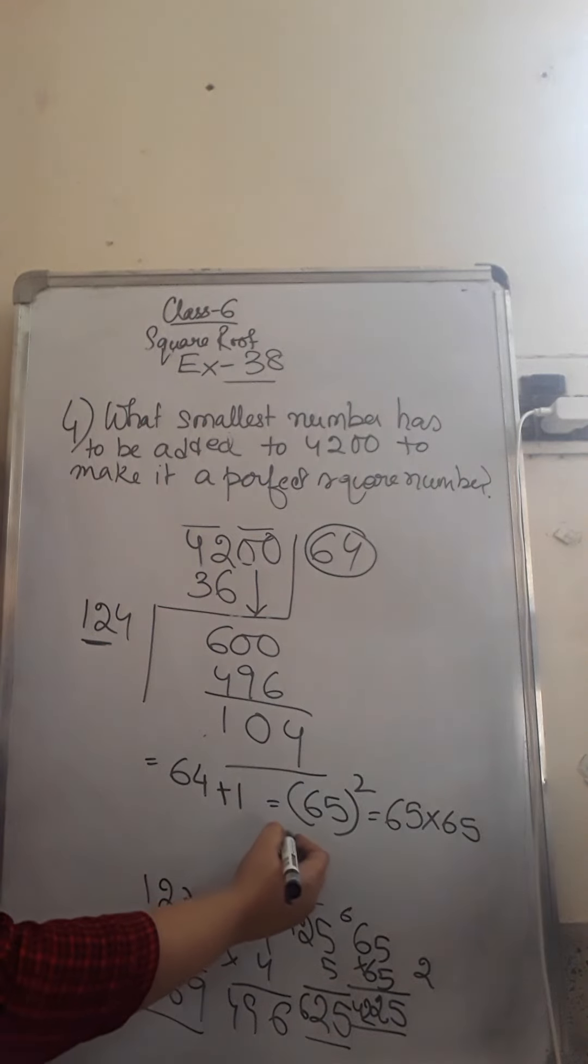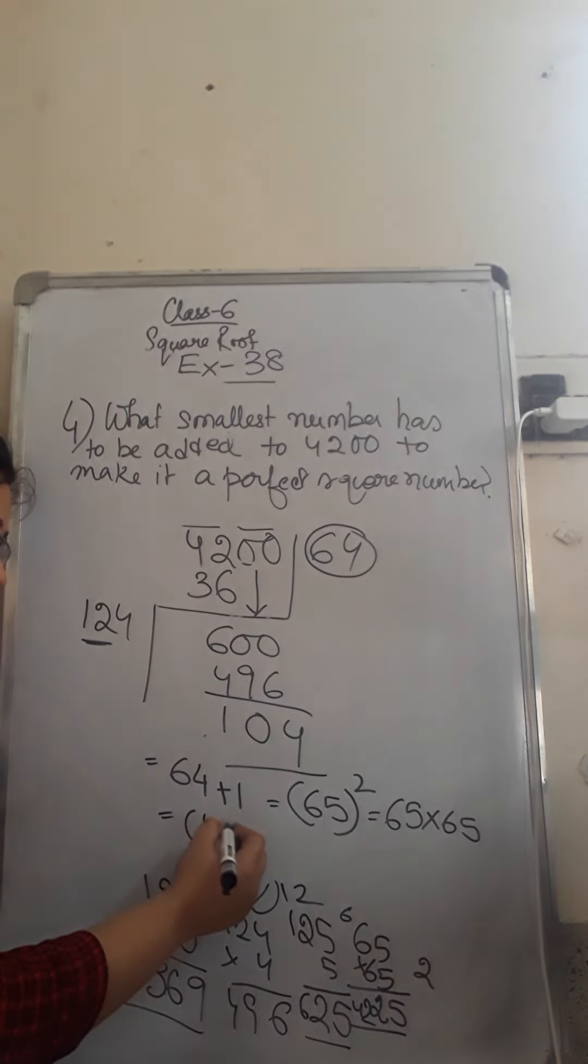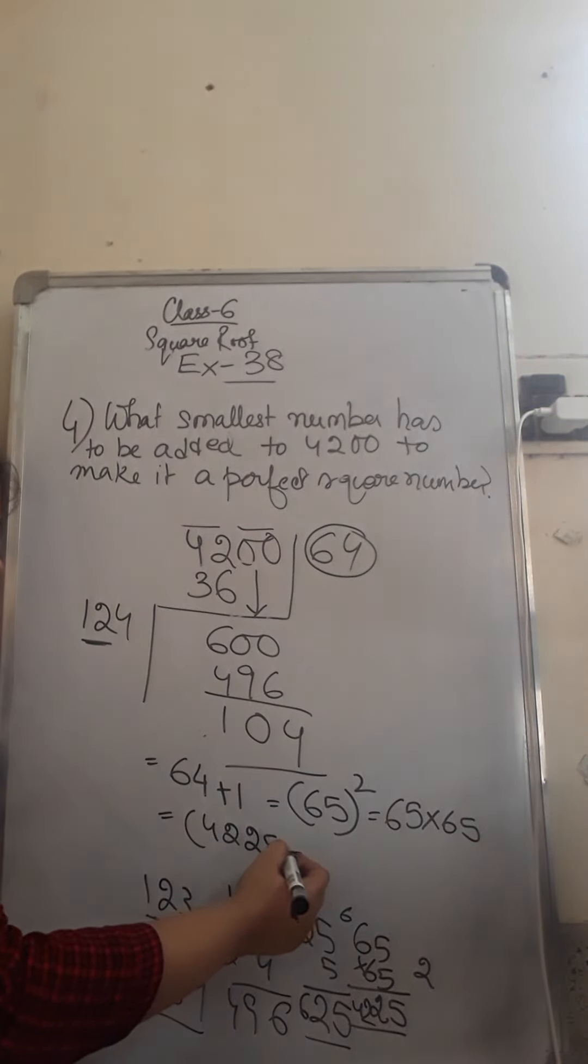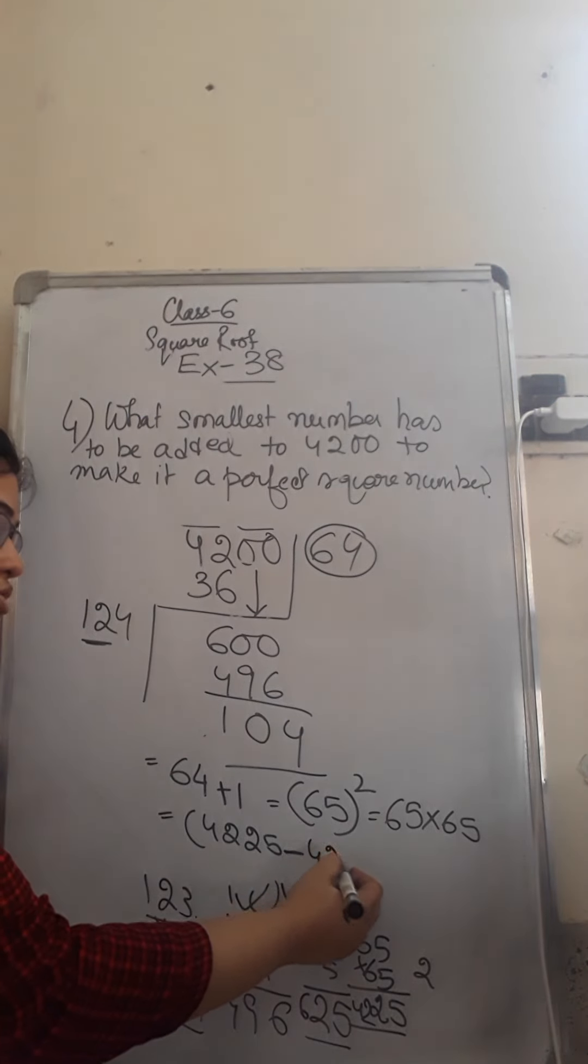So we know the next perfect square number is 4225. Minus 4200.